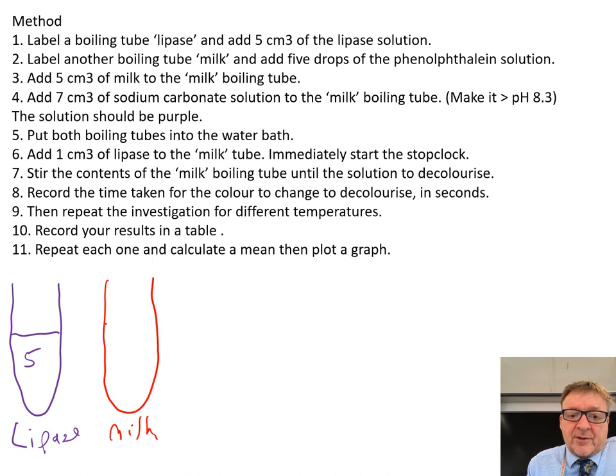Add 5 cm³ of milk to the milk boiling tube, then add 7 cm³ of sodium carbonate solution. When the phenolphthalein is added with the sodium carbonate, the solution should go purple.